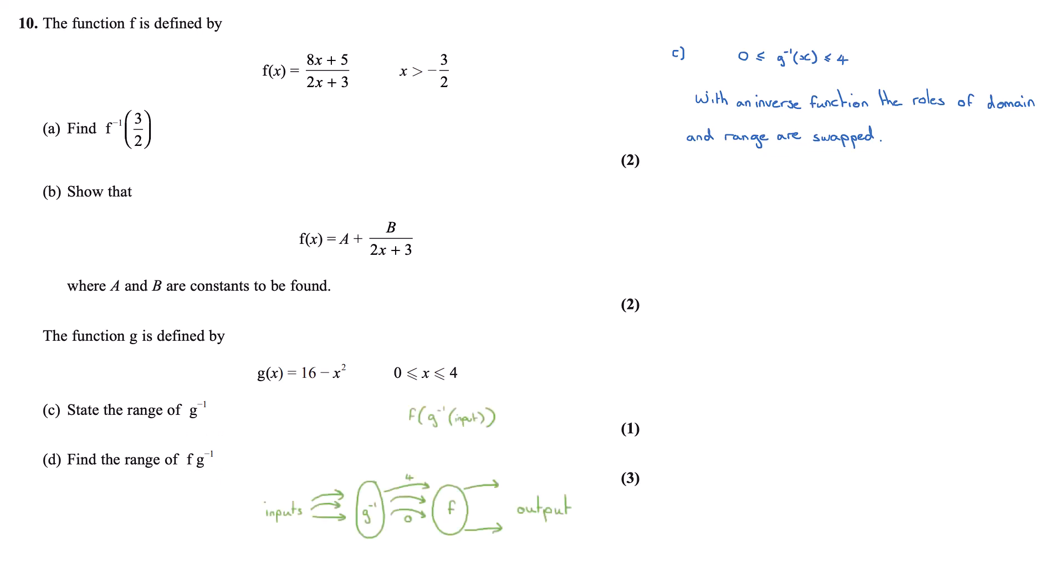Another way that may help you picture this is to imagine the inputs, or the domain, going first into the inverse of g. And then those outputs, which would be the range of g inverse, going into or feeding f as the domain. So the final range is the output of f∘g^(-1).